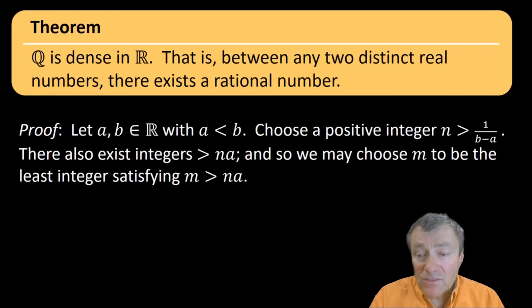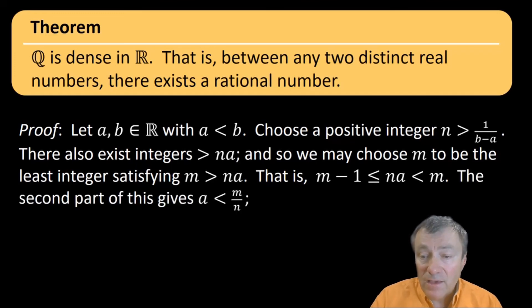So we can choose m to be the least integer bigger than n a. Here I'm using well-ordering from the earlier video. So the set of integers exceeding n a is a non-empty subset bounded below at least, so it has a least element m. Now n a is less than m, but also m minus one is less than or equal to n a, and that is by the minimality of m. And the last thing we wrote just says a is less than m over n.